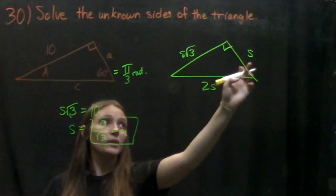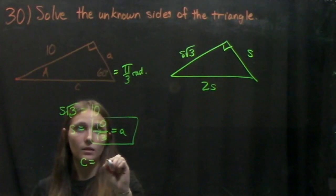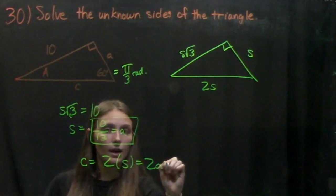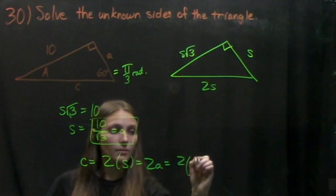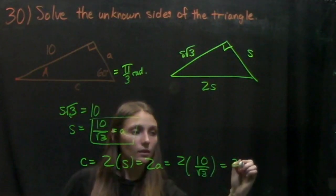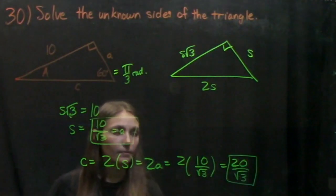Now to find C, all we need to do is multiply that by 2. So we have that C equals 2 times S equals 2A equals 2 times 10 over root 3 equals 20 over root 3. And then we're done.